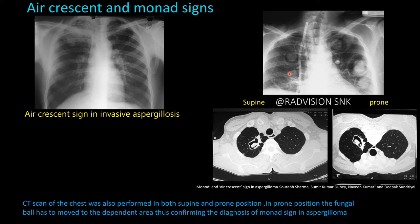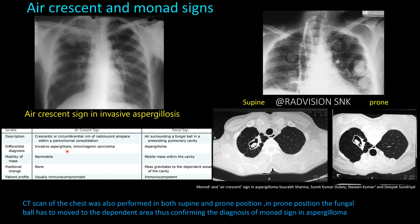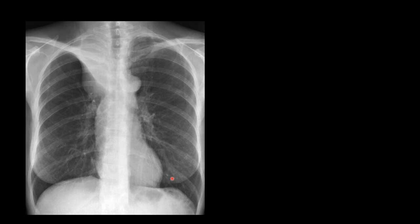This is a case of Wegener's granulomatosis where you can see multiple cavitary lesions with a ball or mass within the cavity, surrounded by air circumferentially in 360 degrees — this is the Monod sign. Remember: the ball or mass should be mobile within the cavity. On CT chest, comparing supine and prone positions, you can see movement of the mass within the cavity. Monod sign is seen in aspergilloma; air crescent sign is seen in invasive aspergillosis. Air crescent sign is non-mobile, usually seen in immunocompromised patients, whereas Monod sign is seen in a fungal ball in a pre-existing pulmonary cavity, mostly aspergilloma, with a mobile mass — seen in immunocompetent patients. Remember: M for mobile, M for Monod.